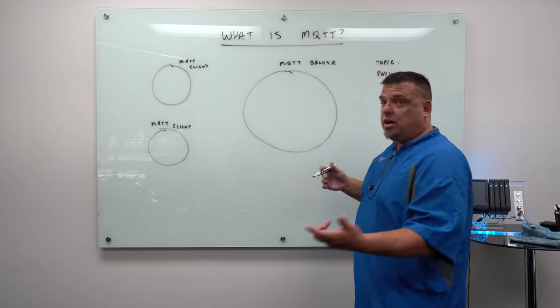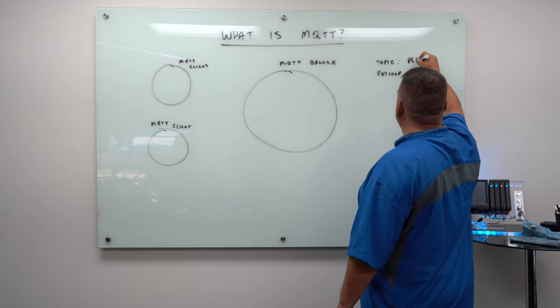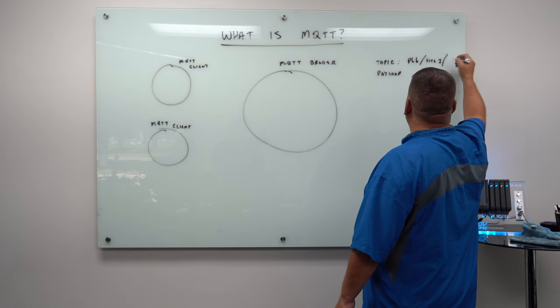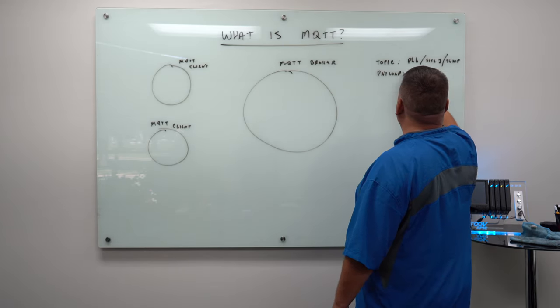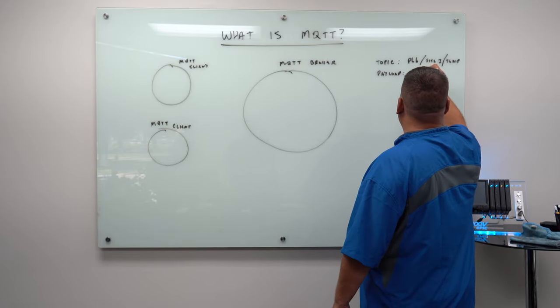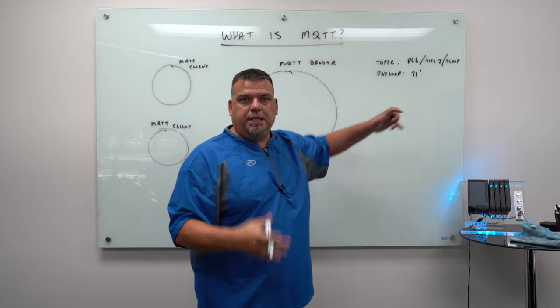So the topic will be the structure of the data. So in this case, let's go ahead and do P66 forward slash site one forward slash temp. And the payload would be whatever the value that payload is. In this case, let's do 71 degrees.